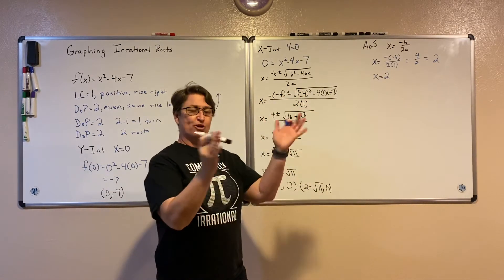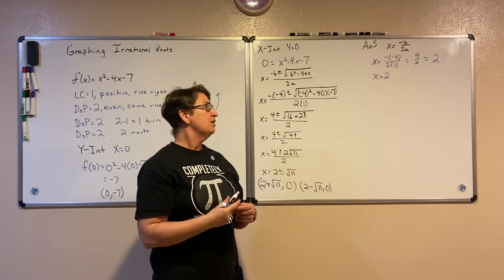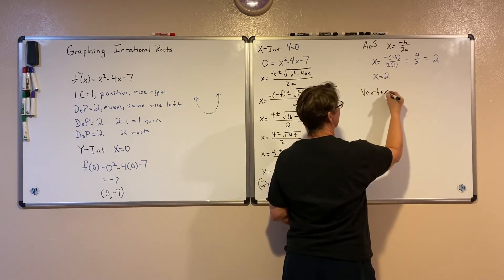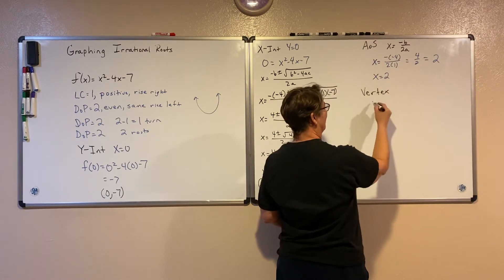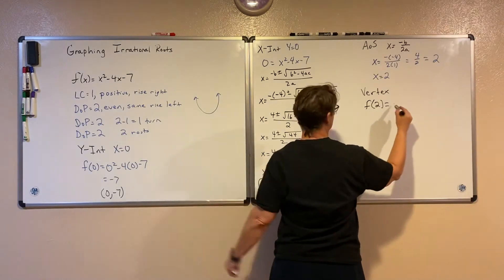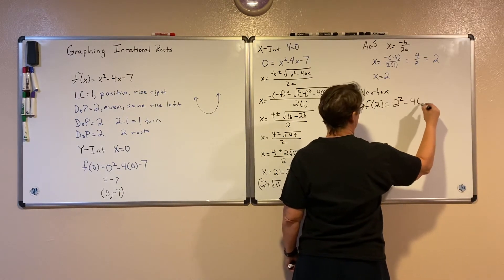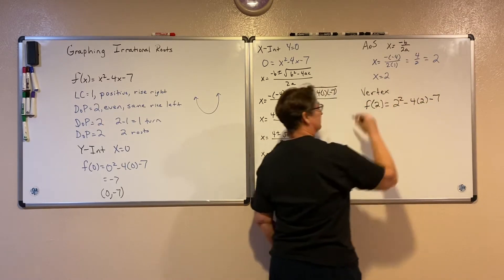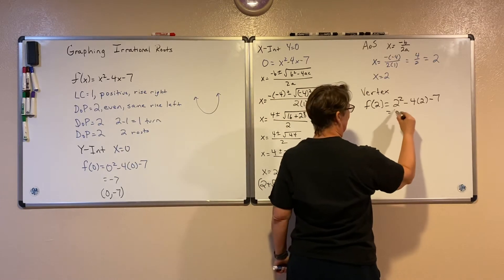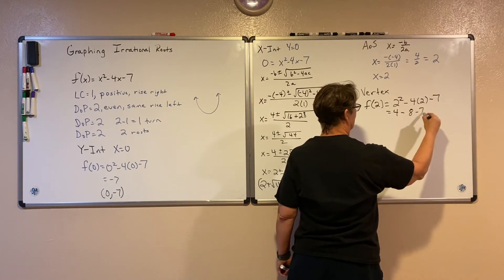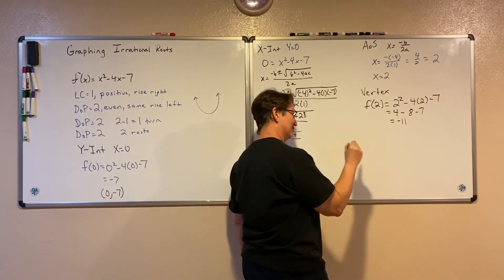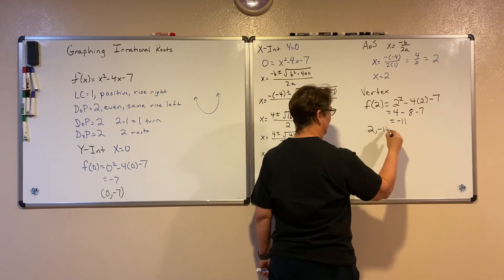I know that my quadratic is going to fold around that line, and my vertex is on that line. To find the vertex of a quadratic, we take the axis of symmetry value and substitute it into the function to find our y-value. So 2 squared is 4, minus 4 times 2 is 8, minus 7 gives me 4 minus 8 minus 7, which is negative 11. So my vertex is the point (2, -11).